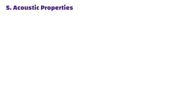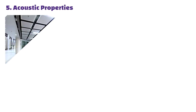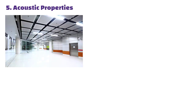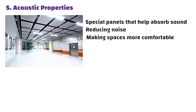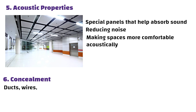Fifth, Acoustic properties. Some metal ceilings have special panels that help absorb sound, reducing noise and making spaces more comfortable acoustically. Sixth, Concealment. Metal ceilings can cover up things like ducts, wires and pipes, keeping the ceiling area looking tidy and organized.